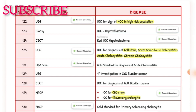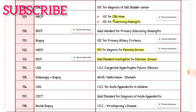Investigation of choice for gallstone, acute acalculous cholecystitis, acute cholecystitis, and chronic cholecystitis — ultrasound. Gold standard for diagnosis of acute cholecystitis — HIDA scan. First investigation in gallbladder cancer — ultrasound. Investigation of choice for diagnosis of gallbladder cancer — MRCP. Investigation of choice for CBD stone — MRCP. Investigation of choice for primary sclerosing cholangitis — MRCP; gold standard — ERCP. Investigation of choice for primary biliary cirrhosis — biopsy. Investigation of choice for pancreas divisum — MRCP; gold standard — ERCP.